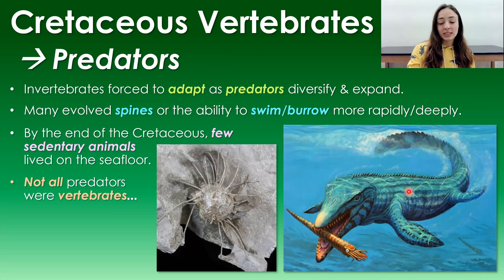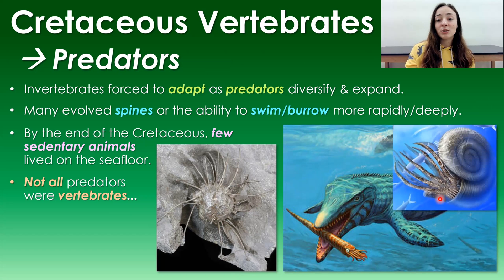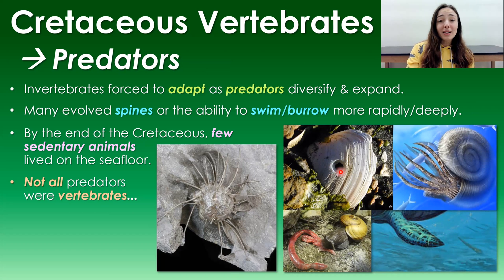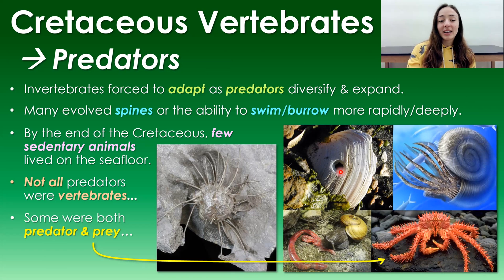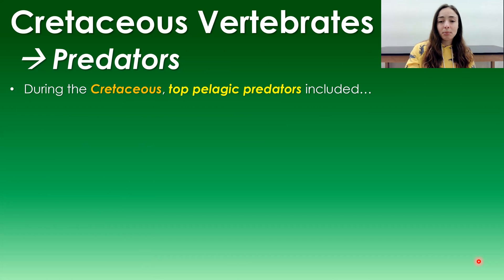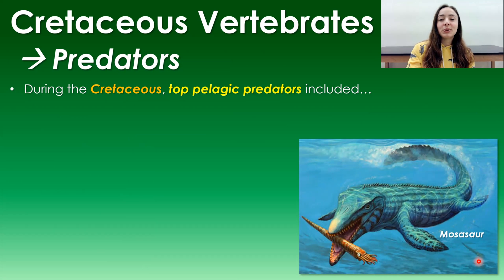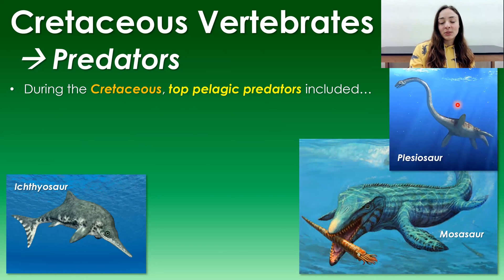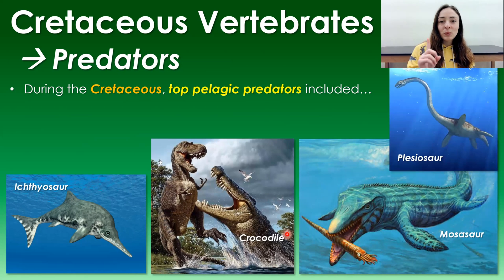Not all predators were vertebrates — many were invertebrates like ammonites, which were major predators throughout the entire Mesozoic, not just the Cretaceous. Gastropods also acted as predators, boring into other molluscs. Some organisms were both predator and prey, evolving spines for defense and claws for hunting. The top marine predators in the Cretaceous included mosasaurs, ichthyosaurs — which look like a reptilian dolphin — plesiosaurs, and crocodiles.